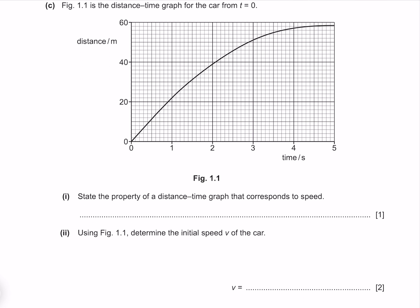Figure 1.1 is the distance time graph for the car from t equals 0. State the property of a distance time graph that corresponds to speed. This is the gradient.